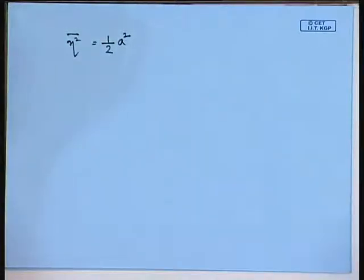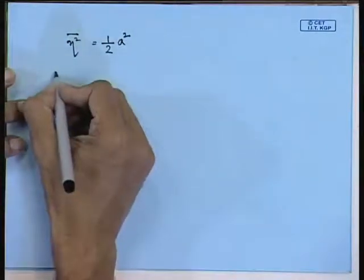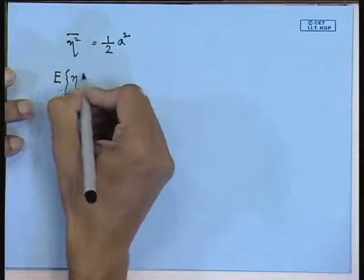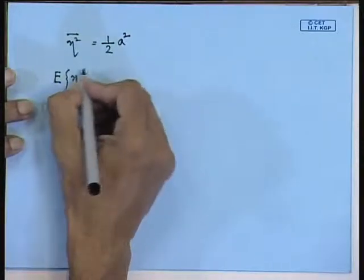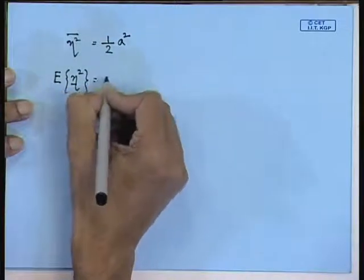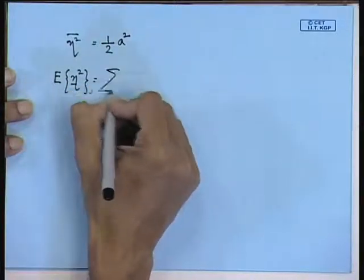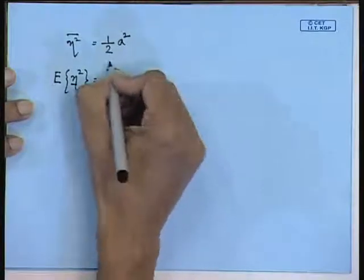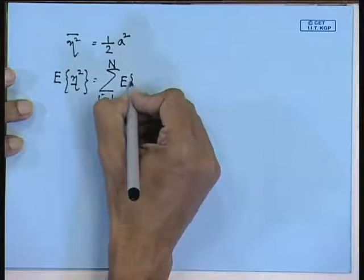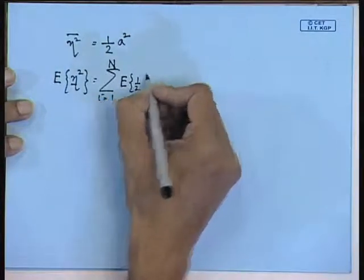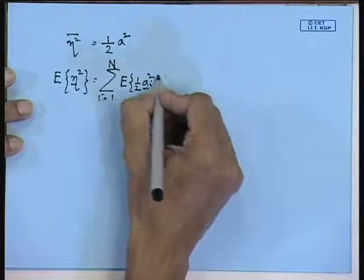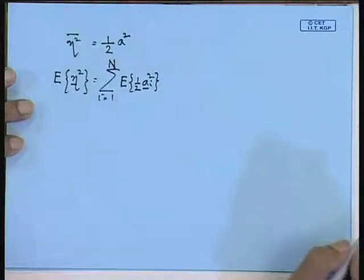The expectation is nothing but the mean. If you take the expectation — the underscore denotes the random variable — this equals the sum from i equals 1 to N, where N is the number of frequencies. You will have the expectation of half a_i squared. This is to be remembered.